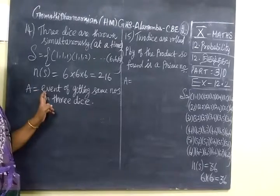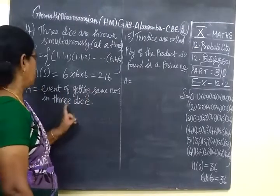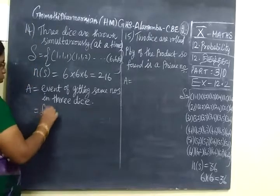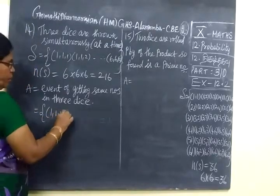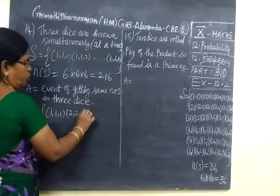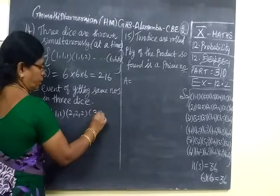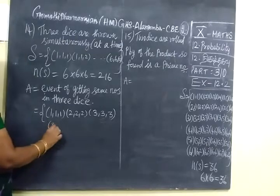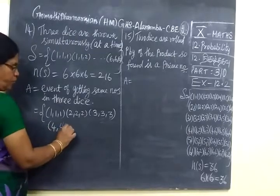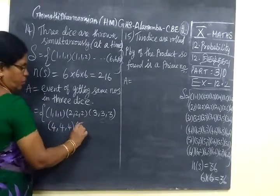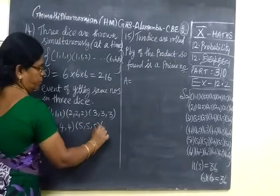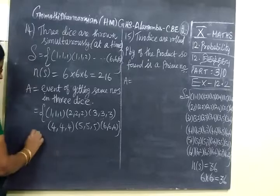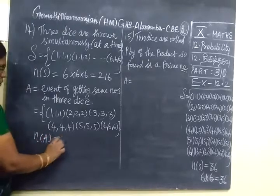So here event A is same numbers in 3 dice. Same numbers mean you can get 1,1,1. Then 2,2,2. Then first die 3, second die 3, third also 3. Then first one 4, second one 4, third also 4. Then 5,5,5. Then 6,6,6. So n(A)=6.